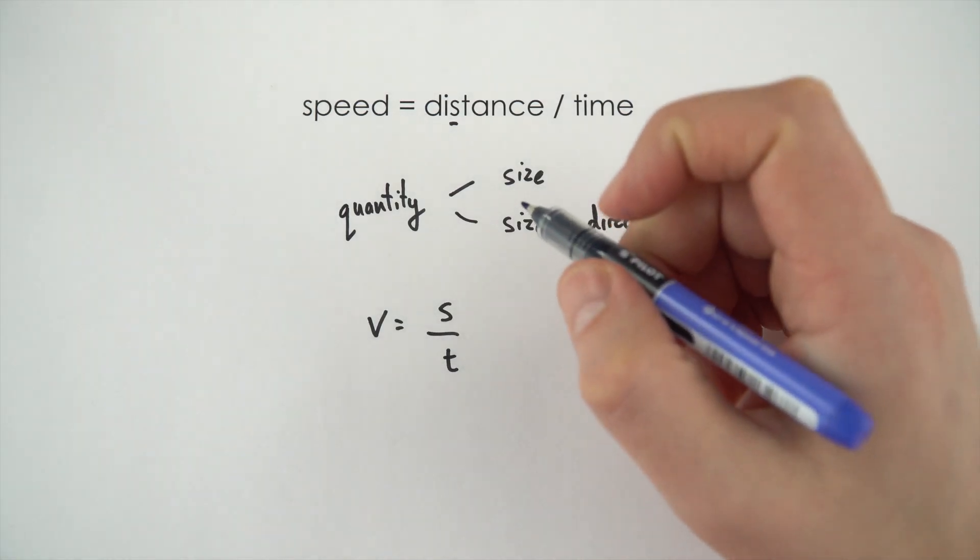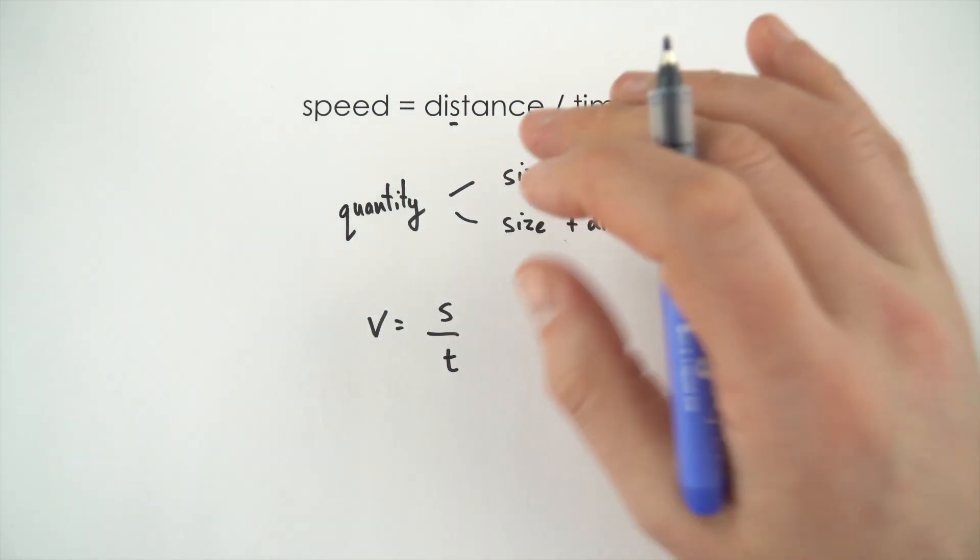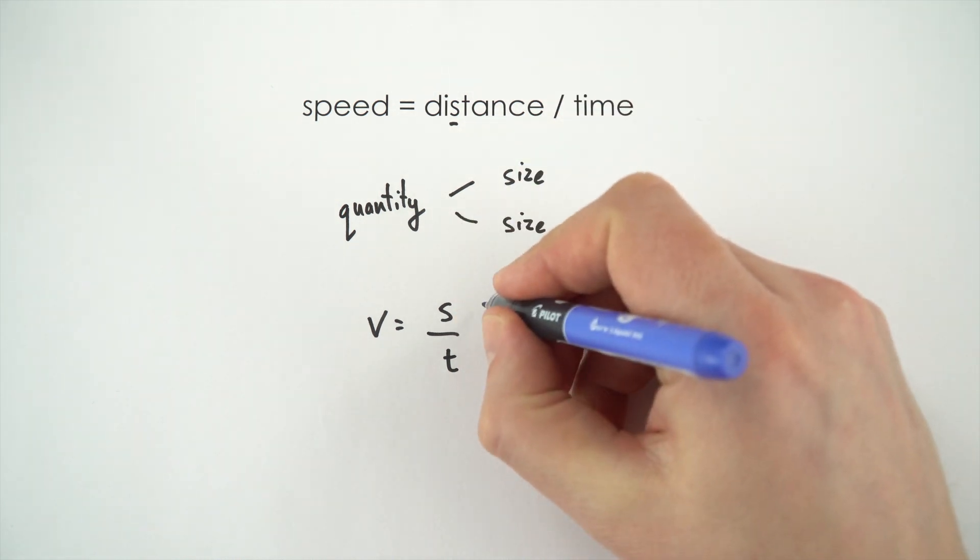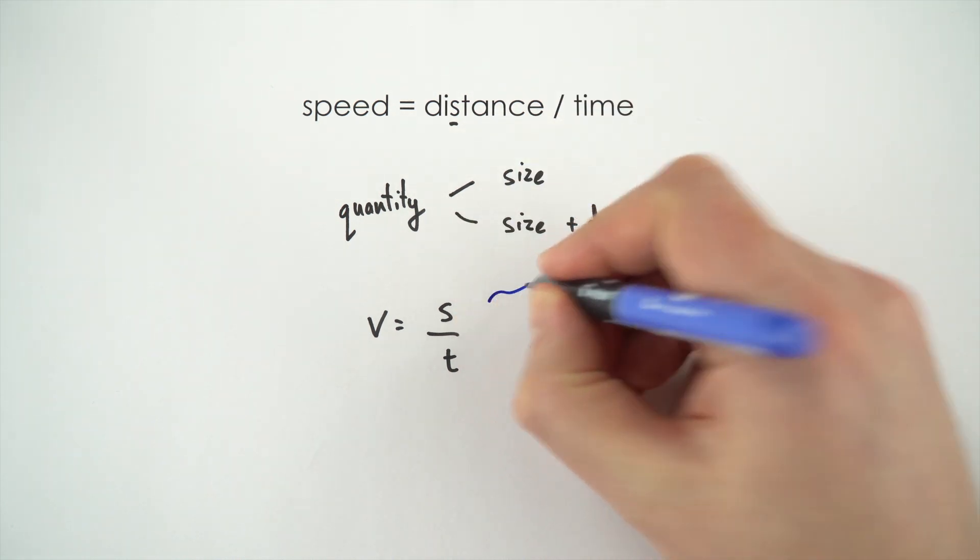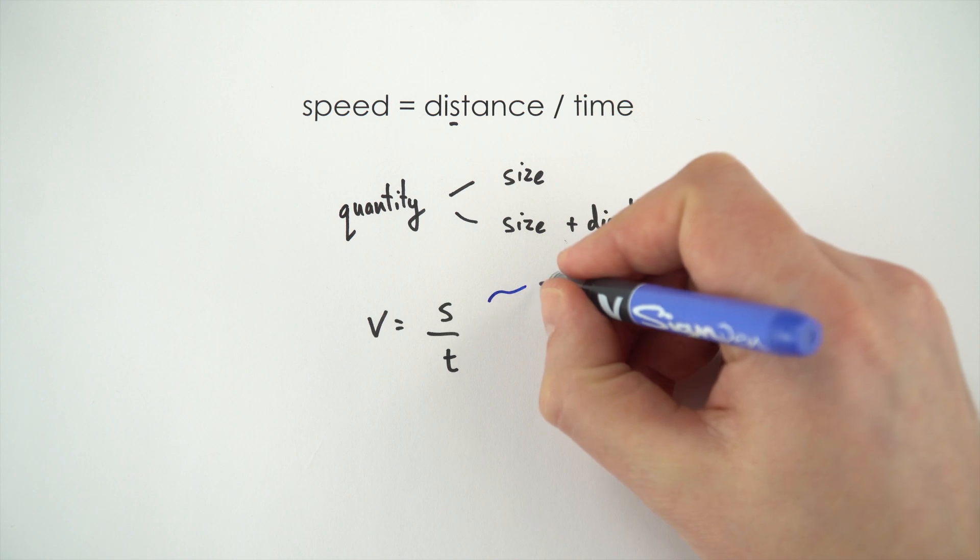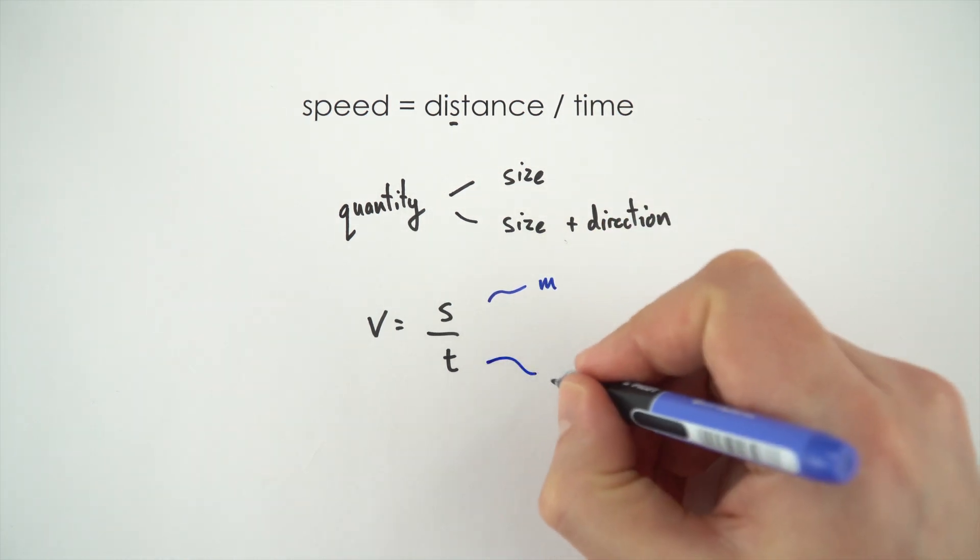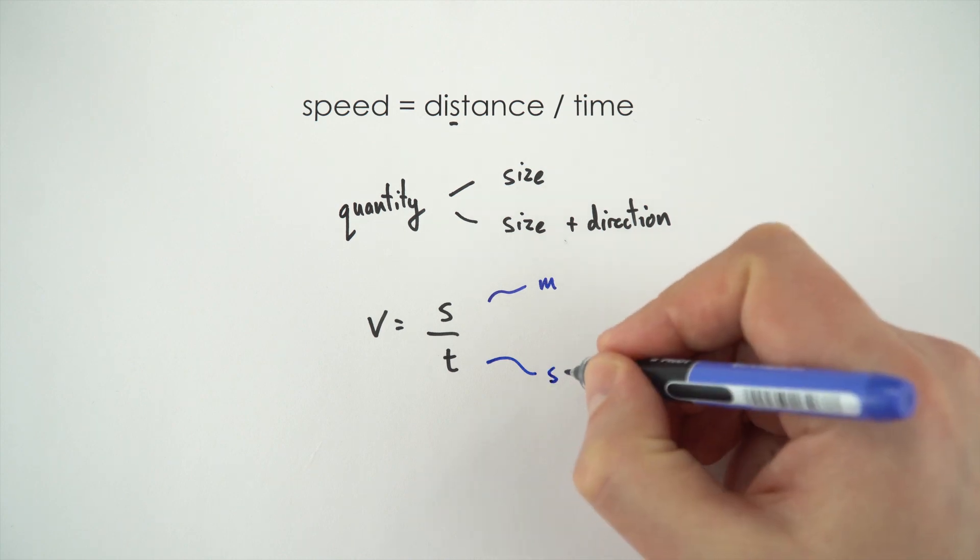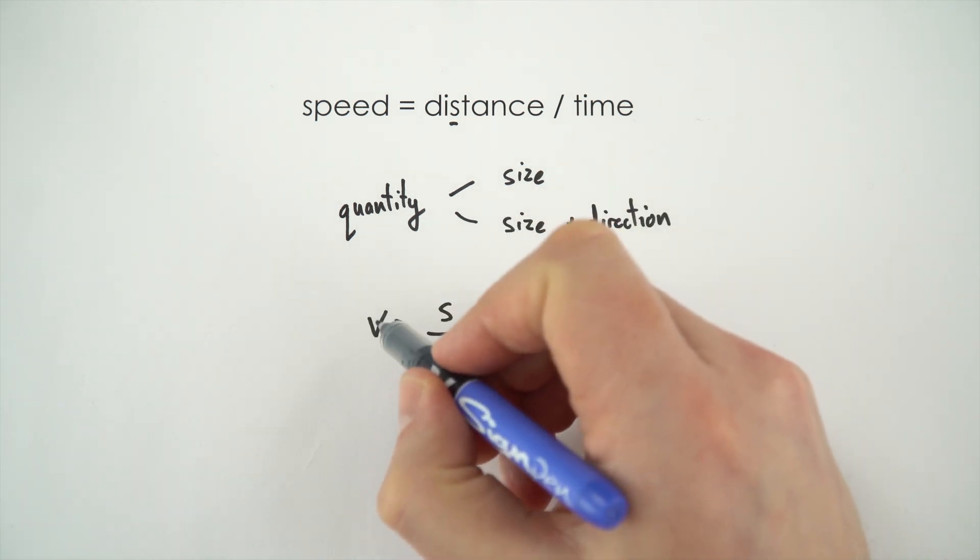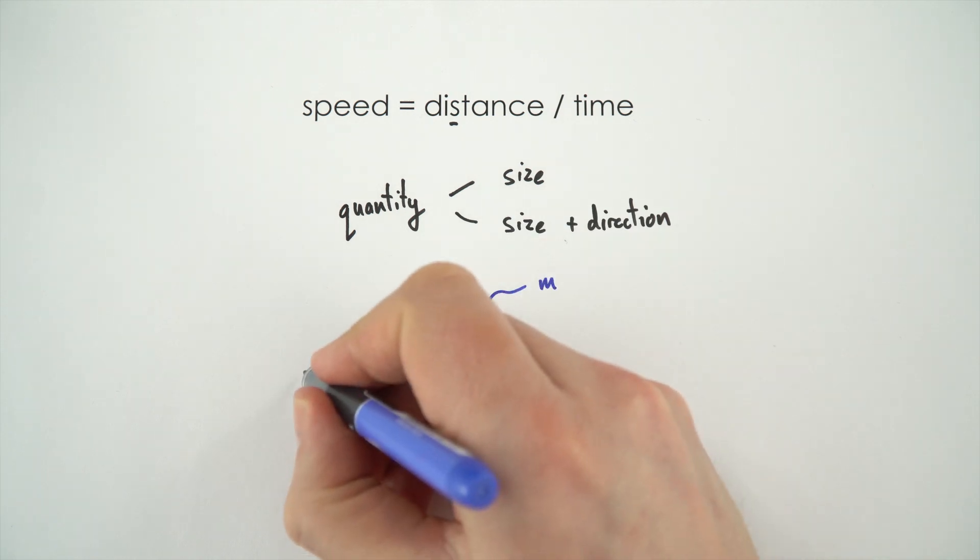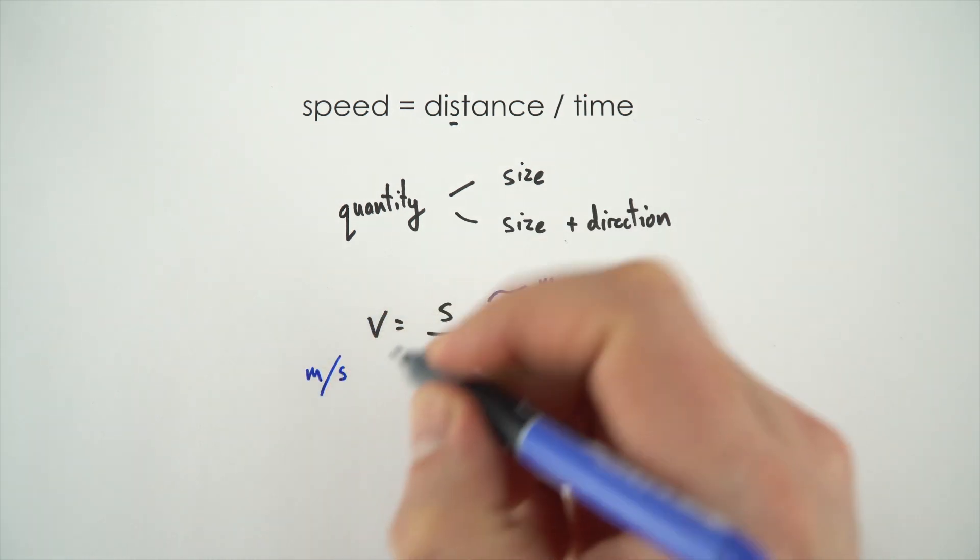Now alongside this we also have the units that we actually measure these quantities in. For example when it comes to the distance we measure this in meters, and we use a symbol M to represent meters. Time is represented with the letter S for seconds, and then we have this derived unit for the velocity which is then meters per second.